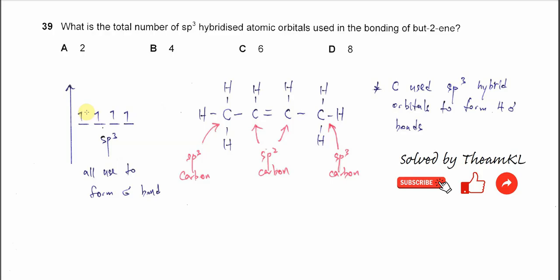To form a sigma bond, these four unpaired electrons will be used to form four sigma bonds. Just remember, carbons use the sp3 hybrid orbitals to form the four sigma bonds.